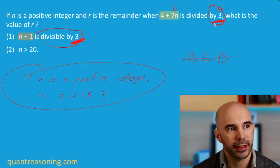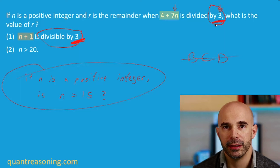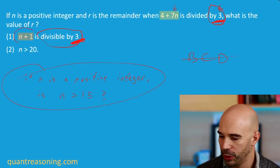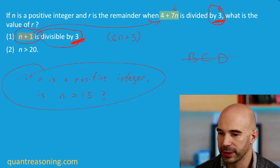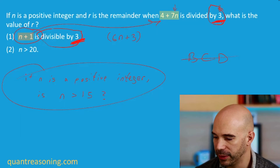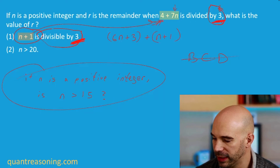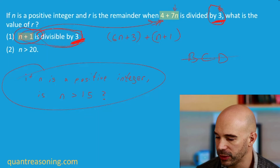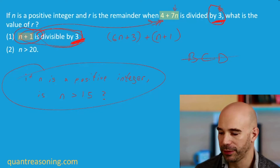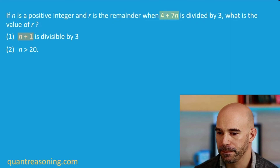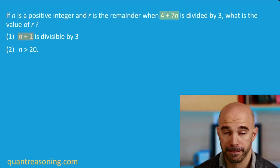Now we need to figure out how to take information about n plus 1 in the world of divisibility by 3 and make an inference about the expression 4 plus 7n in that same world. One way to do it: I know for sure that 6n plus 3 is divisible by 3, because 6n is a multiple of 3 and 3 is a multiple of 3. What I need to add to get to 4 plus 7n is n plus 1, which statement 1 literally just told me is a multiple of 3. Therefore, the remainder is 0.